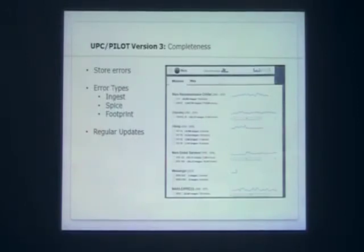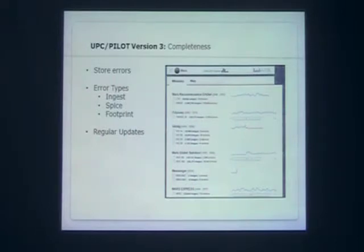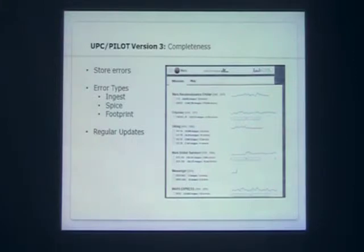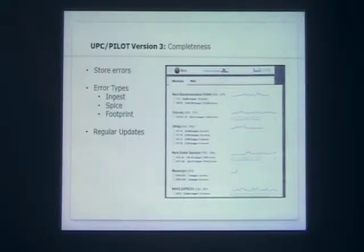For version 3, one of our first issues was completeness. We're over at the USGS making this cool database, and we'd show it to the cartographers. They'd do a search and ask: is the latest PDS release there? Is the non-release stuff there? What about the error data? And we'd have to run back to the office to figure that out. What we're doing in this release is trying to tackle that problem — going through all the release data and showing how many images errored out.